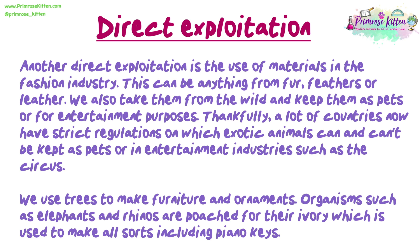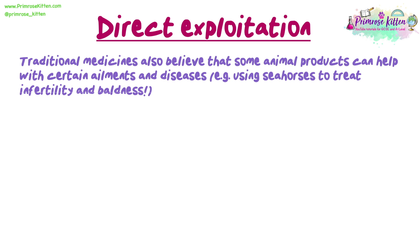We use trees to make furniture or ornaments. Organisms such as elephants and rhinos are poached for their ivory, which is used to make all sorts of things including piano keys. Traditional medicines also believe that some animal products can help with certain ailments and diseases — for example, using seahorses to treat infertility and baldness.